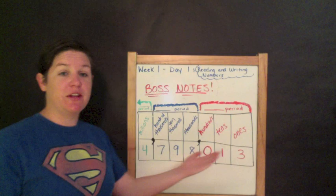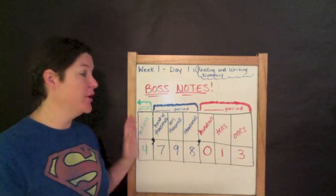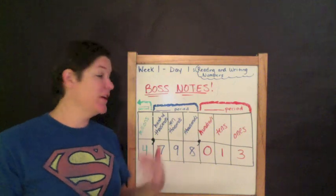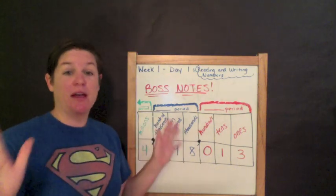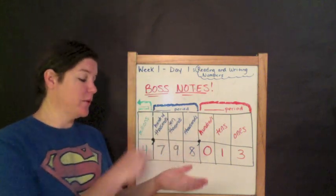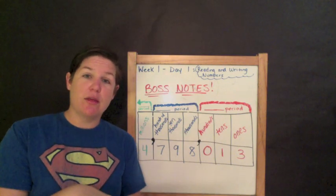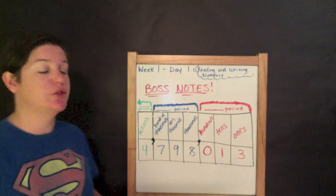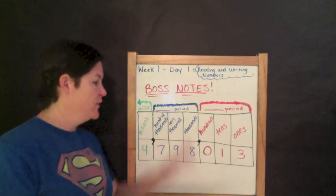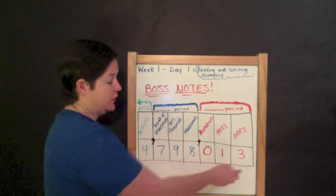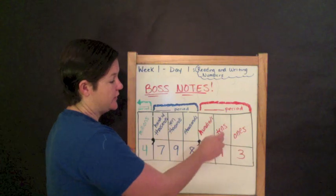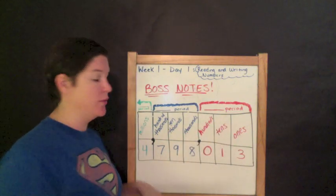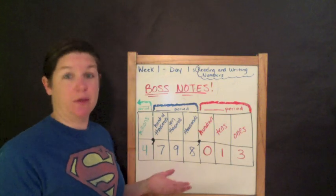I filled the entire thing in, so I'm going to go through the chart and what you need to record. After I finish going over the Boss Notes, I want you to pause the video and go ahead and record everything in your chart. So in third grade, we worked on the ones, tens, hundreds, and thousands place. Those should all be familiar to you. If not, it's okay — we're going to learn them now.